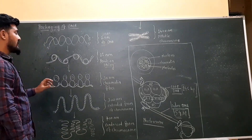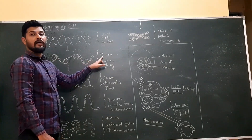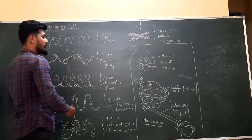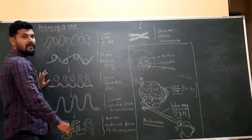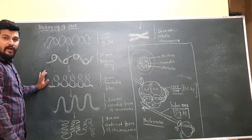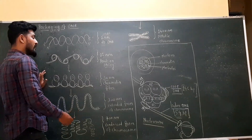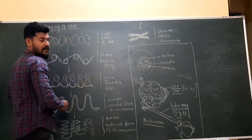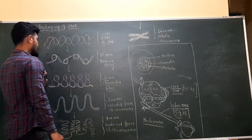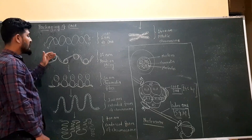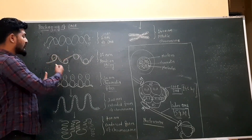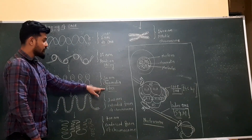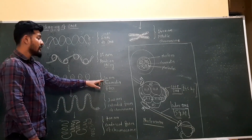This beads-on-string model forms a 10 to 11 nanometer fiber. These beads on string are arranged over one another and they form the 30 nanometer fiber. This 30 nanometer fiber is also called as the solenoid fiber. This solenoid fiber is again packaged to form the 30 to 80 nanometer chromatin fiber. These beads on string are further packaged to form the chromatin fiber, and the diameter of the chromatin fiber can be 30 to 80 nanometers.